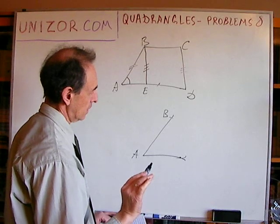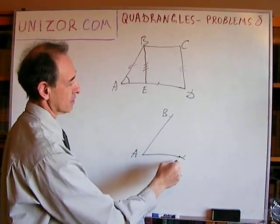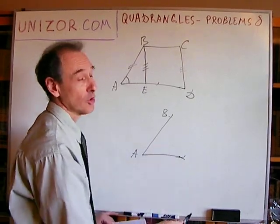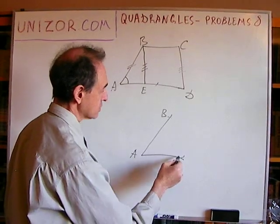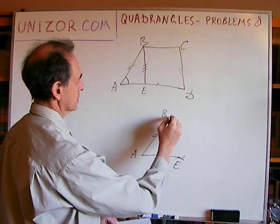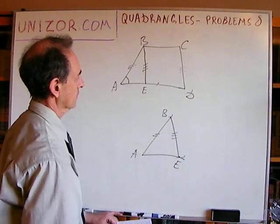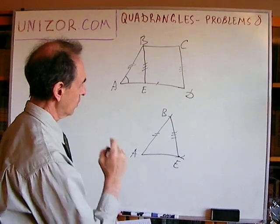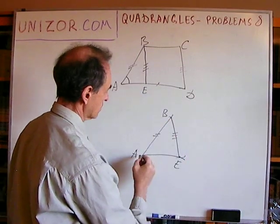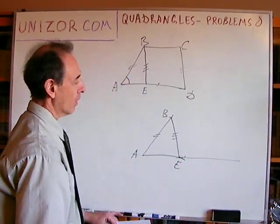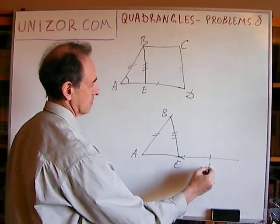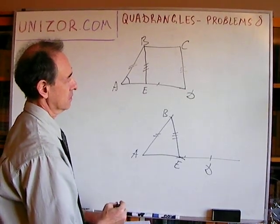Now, if it's a circle, it can actually intersect in two points, or in one point, or in no points at all. So let's just assume we have some point E. Now, how to reconstruct the whole trapezoid? You know that AD has a known length. So from A, you extend beyond point A to point E, and just measure segment AD. From there, you draw a parallel line to this one, and from B you have a parallel line to this one — and there is your trapezoid.